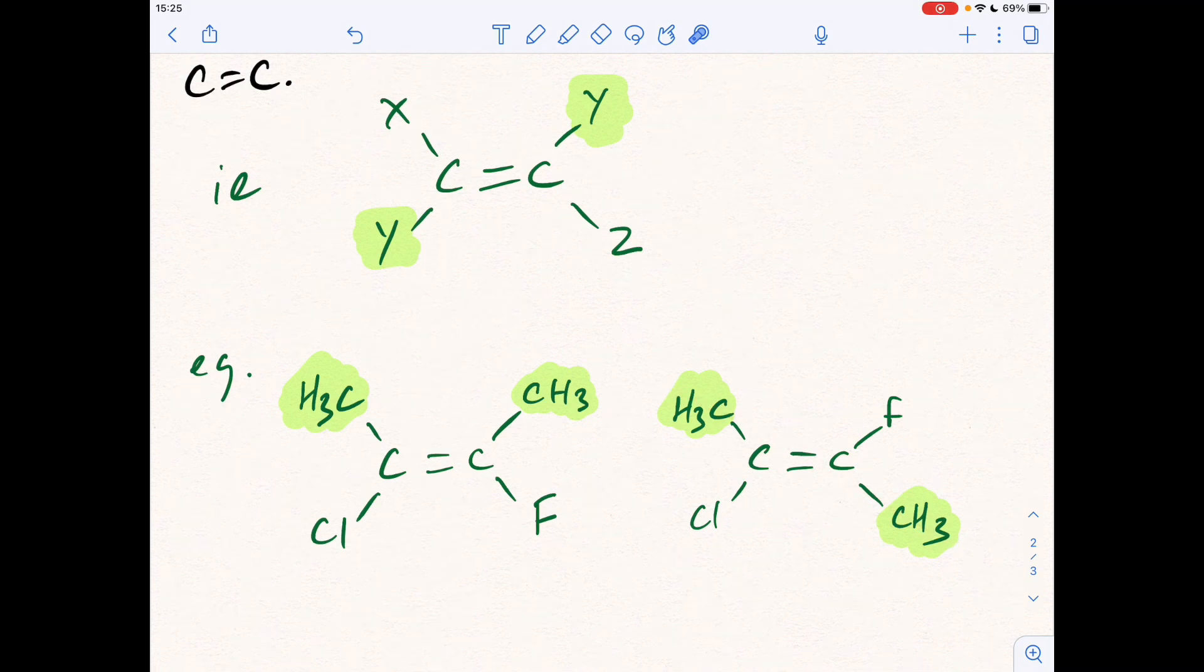So we're not interested in priority now, we're just comparing the relative positions of the two identical groups or atoms. So when the identical groups are on the same side of the double bond, like you've got in the left-hand one, that's the cis isomer. And when they're on diagonally opposite sides, that's the trans isomer.